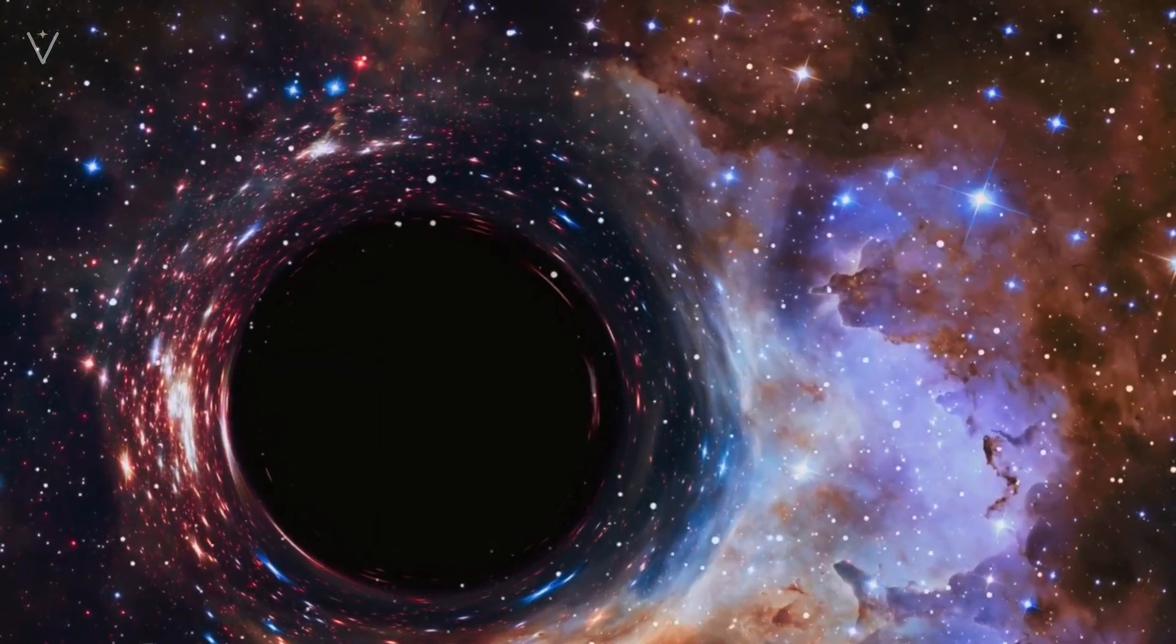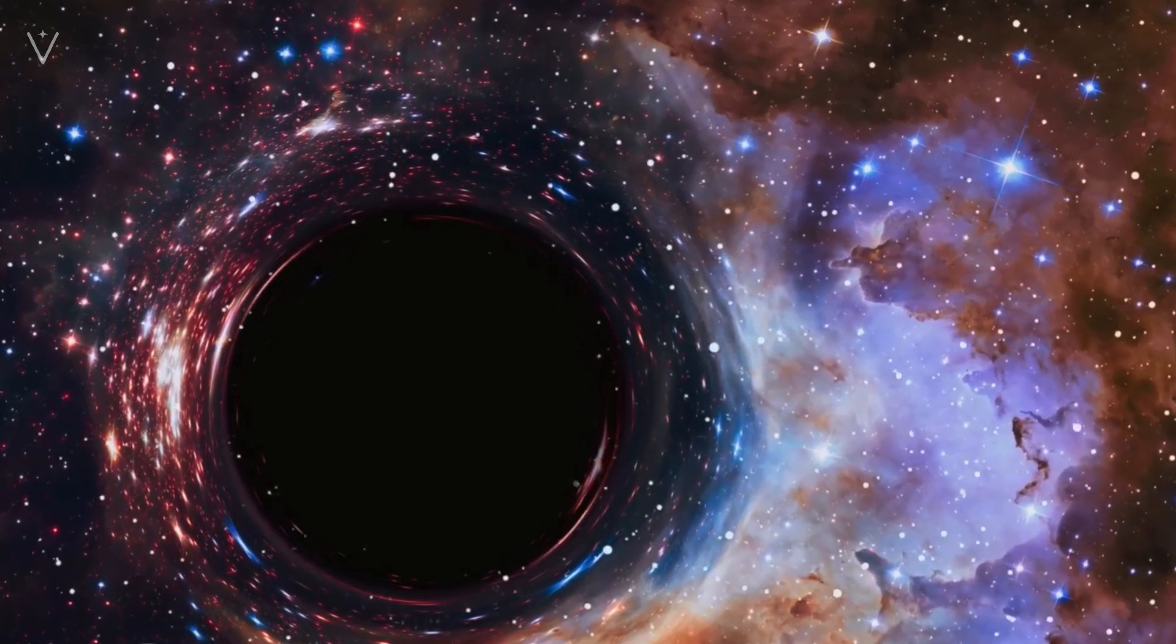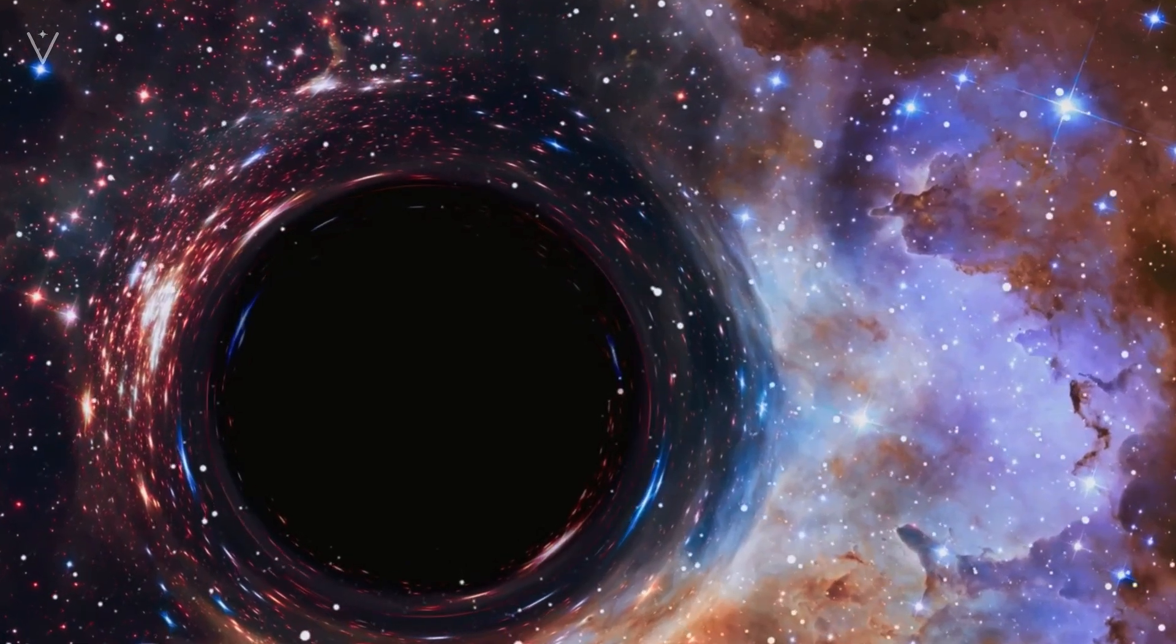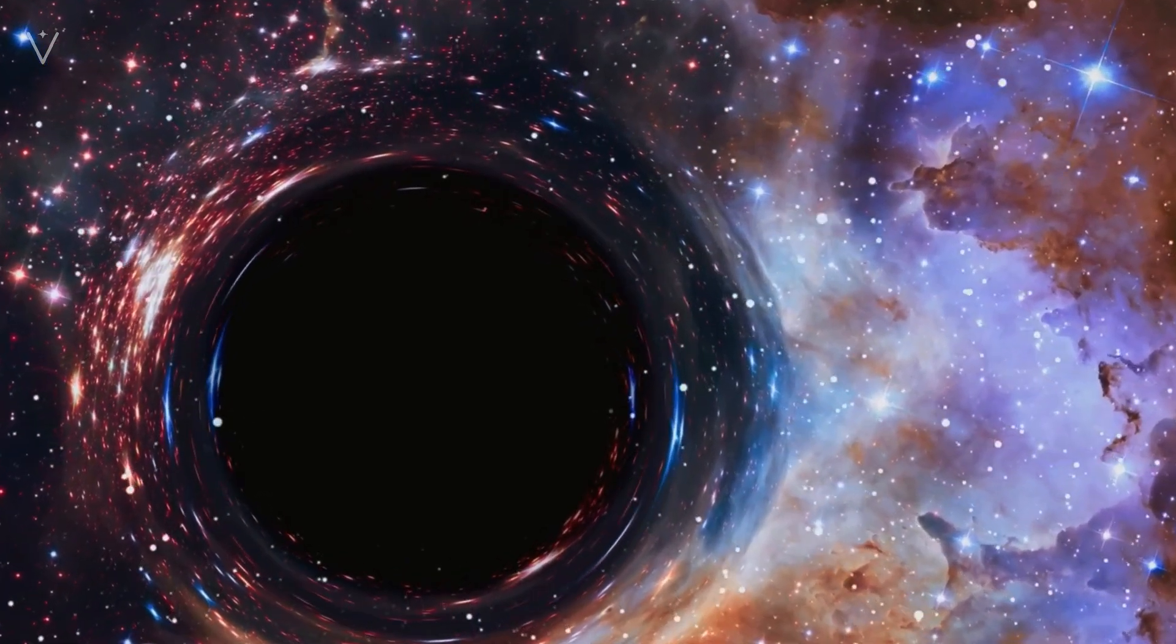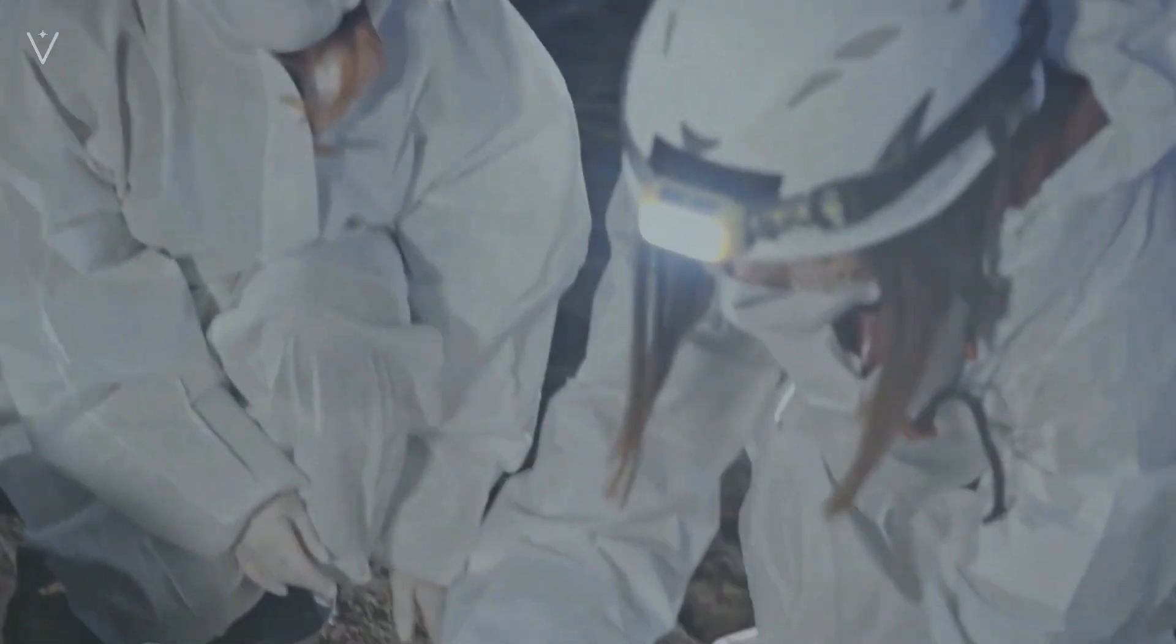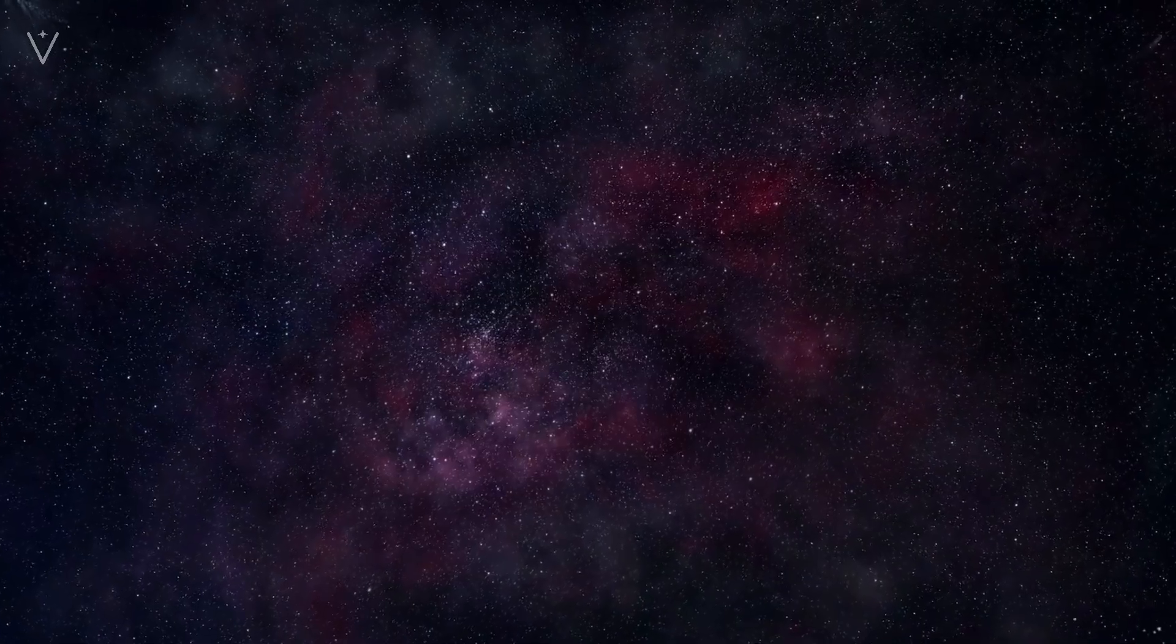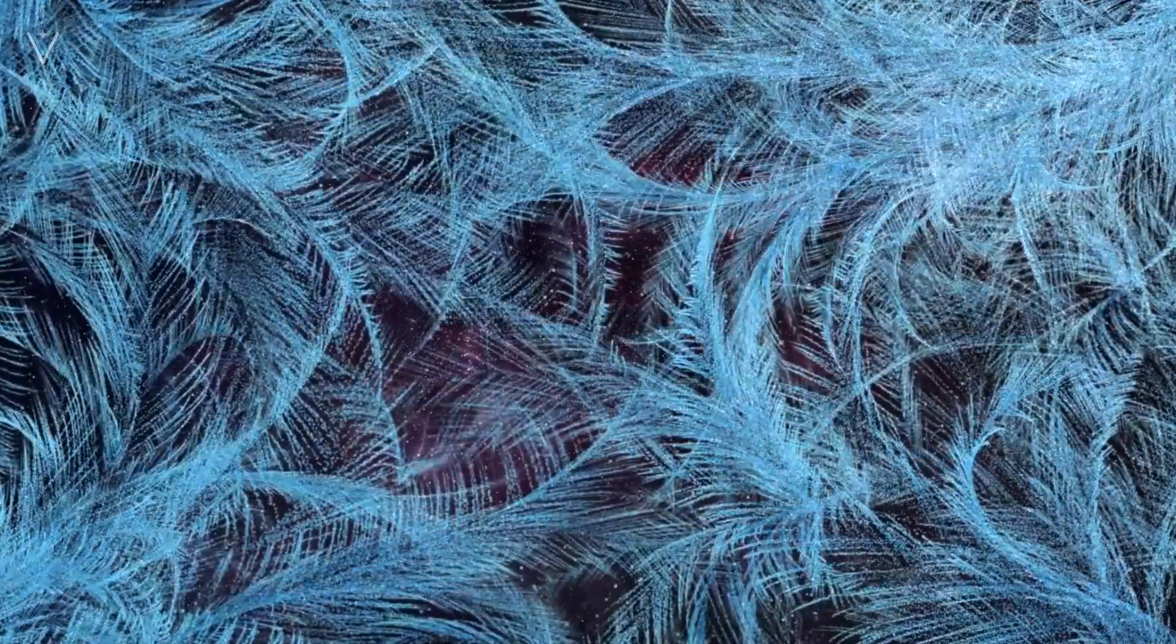Imagine tossing a pebble into a pond. The pebble creates ripples that spread out across the water's surface. Gravitational waves are similar, except they're ripples in the fabric of space-time itself, created by cataclysmic events like the collision of black holes or neutron stars.